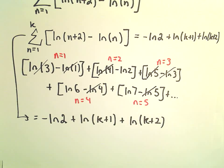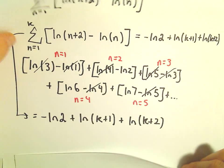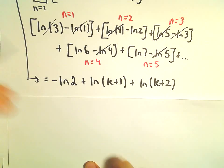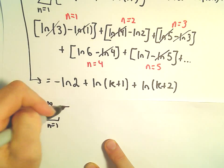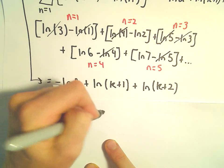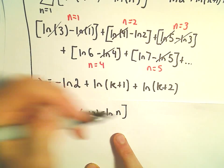And now what we're going to do is to evaluate the sum. We're going to say the sum from n equals 1 to infinity of the natural logarithm of n plus 2 minus the natural logarithm of n.